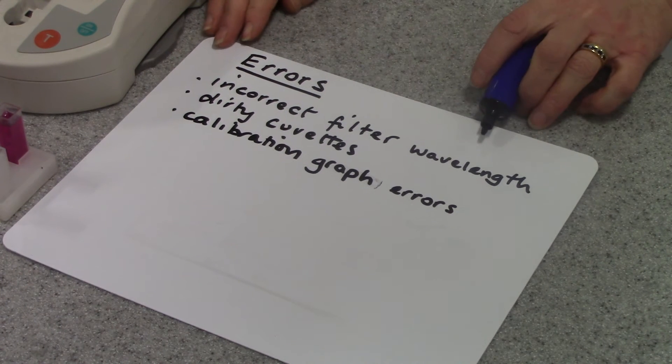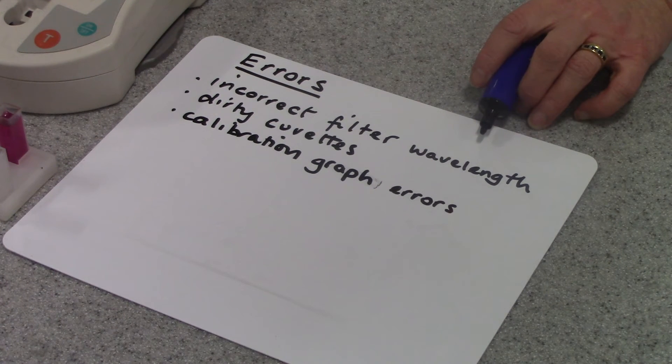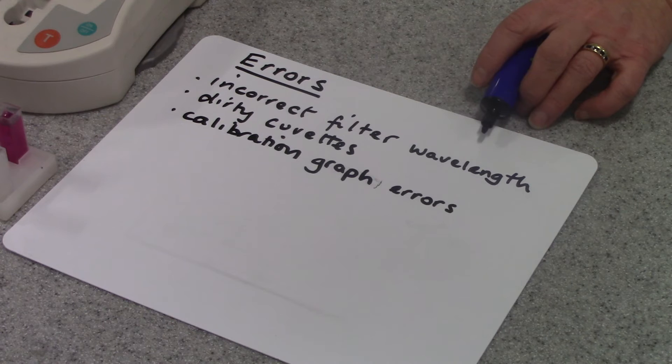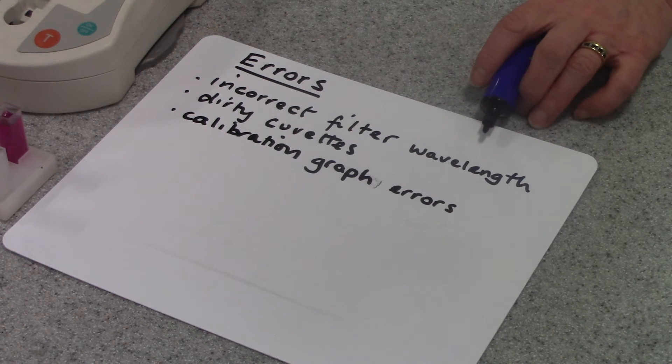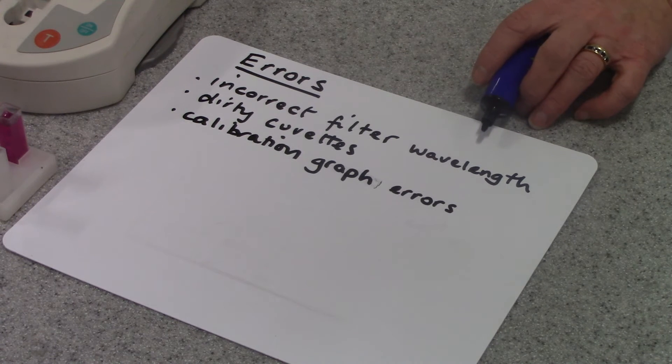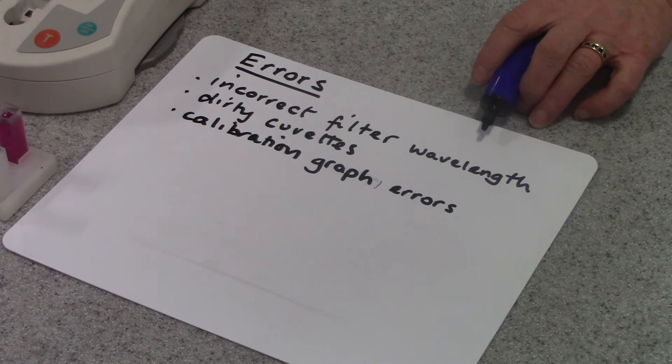The first error is if you haven't set it to the correct wavelength for the color of solution that you are testing. So you need to check that. The other error is using dirty cuvettes or scratched cuvettes. If your solution has any particles in it, precipitate or anything, that can affect your absorbance.